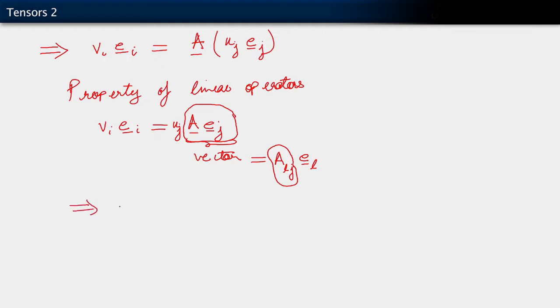So, what does this imply for us? It implies then that our representation allows us to write V_i E_i equals U_j A_L J E_L. Everywhere, this summation convention is implied.